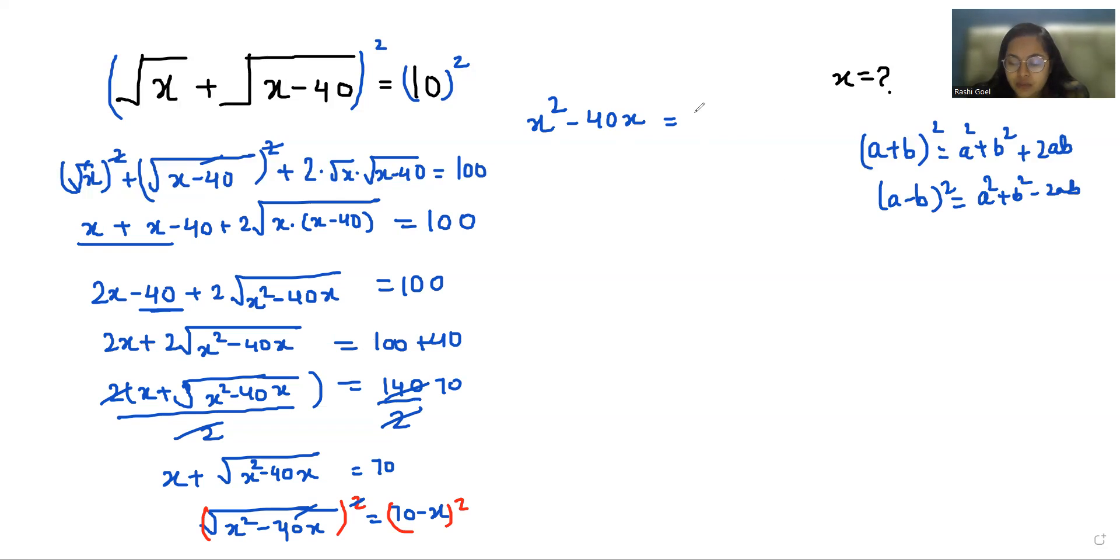So a is 70. 70 square plus x square minus 70 times x times 2. So x square minus 40x equals 4900 plus x square minus 140x.